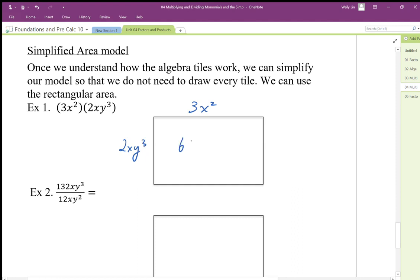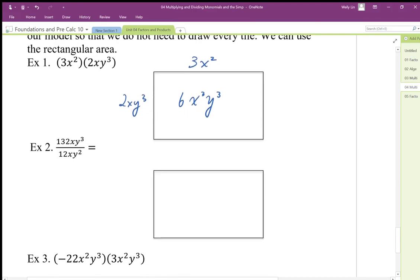When we do this, we can use our simplified area model instead of showing each algebra tile. We're going to just do 3 times 6, x² times x, and then the y³.